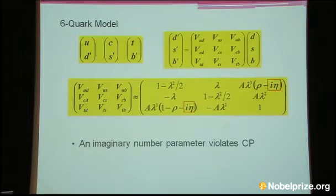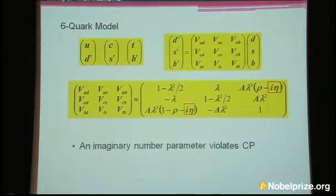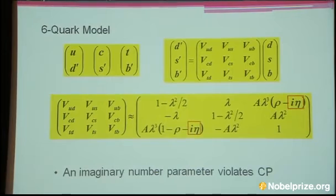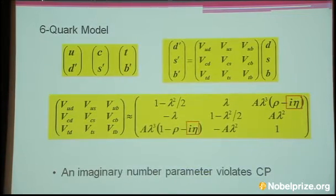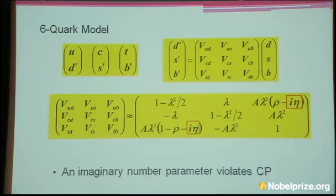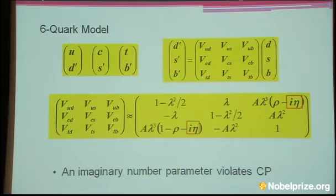How does this argument change in the six-quark model? The mixing matrix becomes a three-by-three unitary matrix. In this case, we cannot remove all the phase factors of the matrix elements by adjusting the phases of the quark fields. After adjusting them as much as possible, we are left with a matrix expressed with four parameters, including one parameter representing the imaginary part of the matrix element. Therefore, if eta is not zero, this system violates CP symmetry. We saw that this mechanism of CP violation is very interesting and elegant.